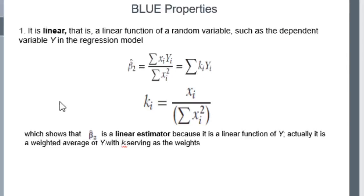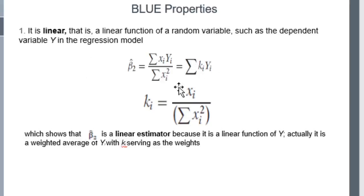Let us examine the BLUE property. The first property is linear, the second property is unbiased, and the third one is minimum variance. These three properties constitute the BLUE property, and following them leads to the Gauss-Markov theorem.